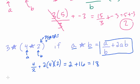Now what happens? We rewrite the equation. Instead of 3 star in parentheses 4 star 2, we have 3 star 18. And then we just simplify. So we have 3 over 18, a over b, plus 2 times 3 times 18.